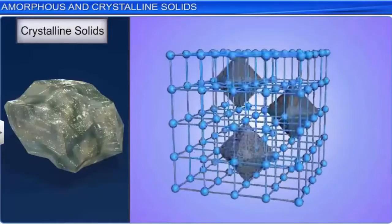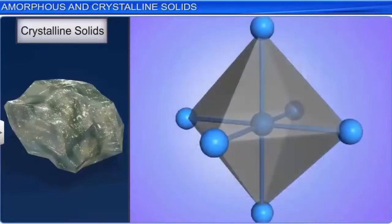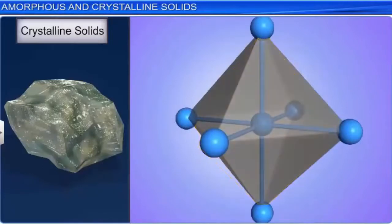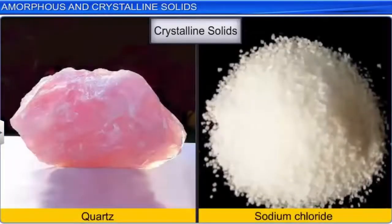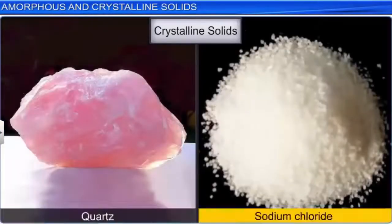Thus, a crystal is defined as a solid figure that has a definite geometrical shape, with flat faces and sharp edges. Quartz and sodium chloride are examples of crystalline solids.